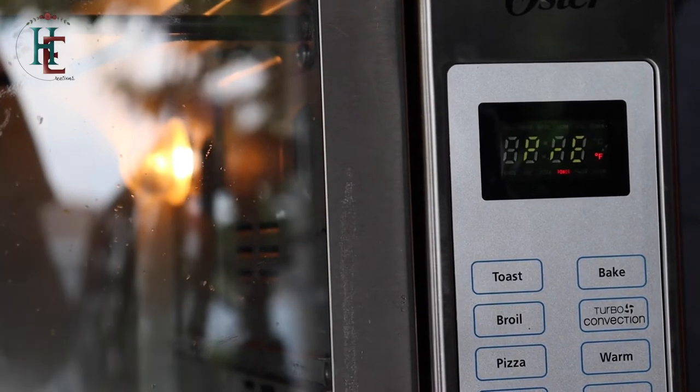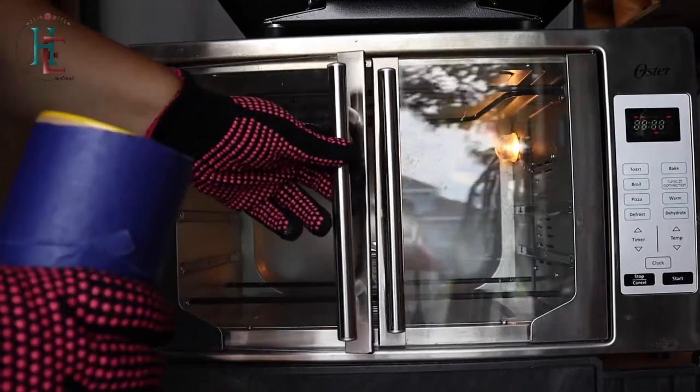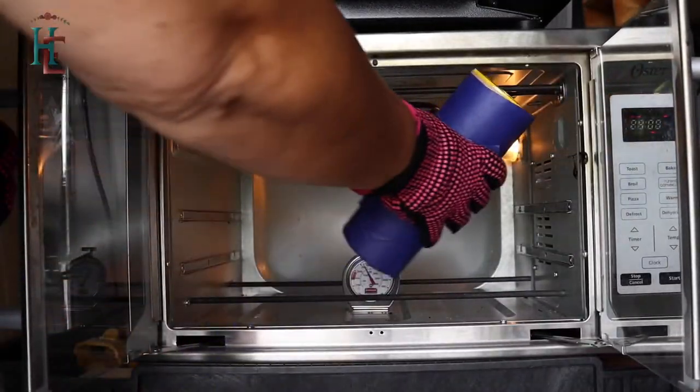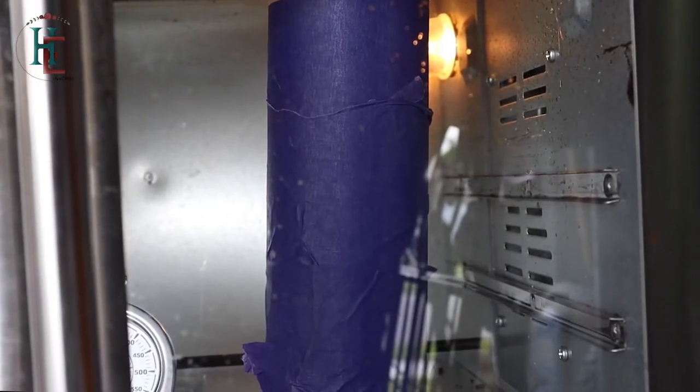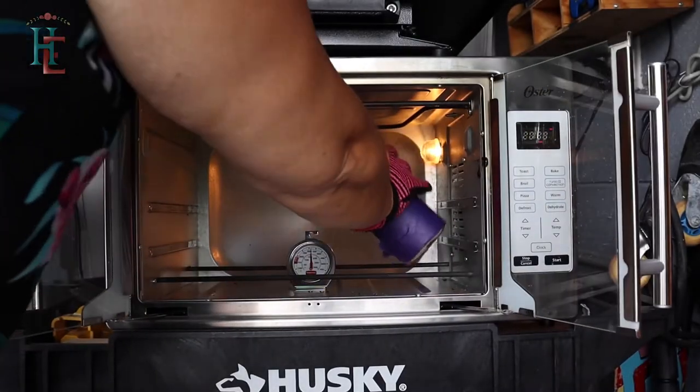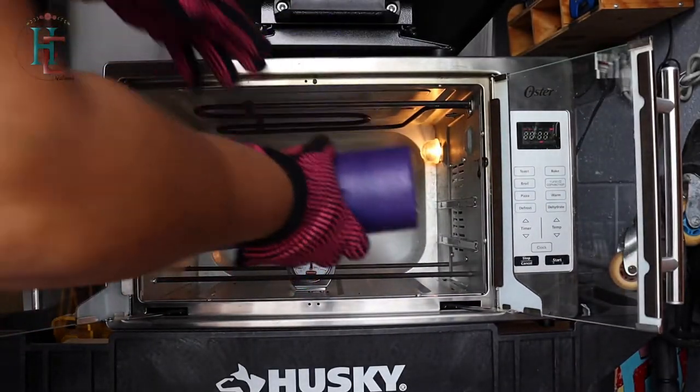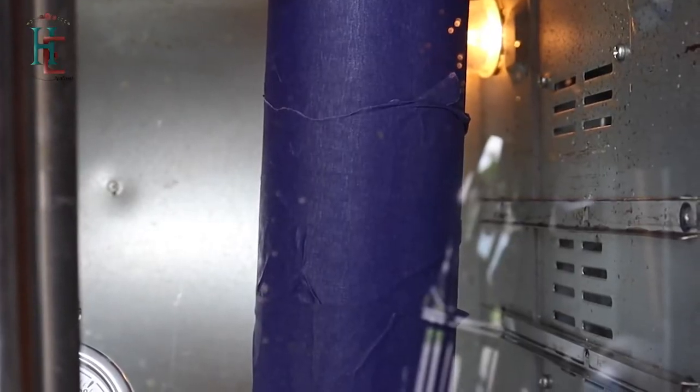Here it is. I'm preheating. I wasn't going to show what I do, but I've had people say they want beginning to end. Here we go. I do three minutes at 350, I flip it around as you can see, and I do another three minutes.